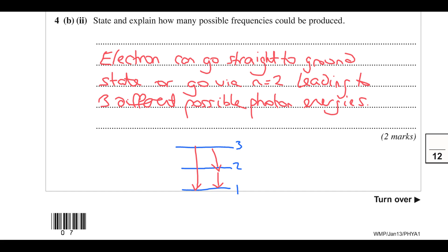The three routes are: n = 3 to n = 1, n = 3 to n = 2, and n = 2 to n = 1, giving three different possible routes and three possible frequencies. That finishes the question on energy levels.